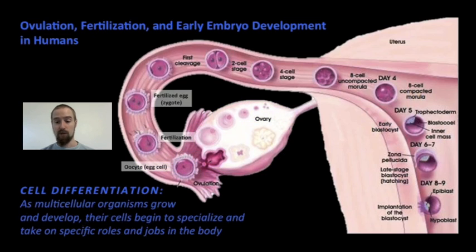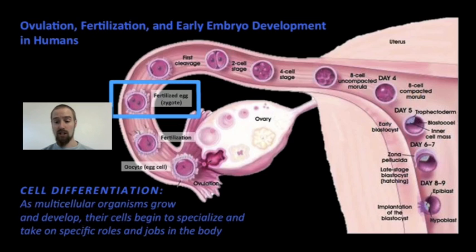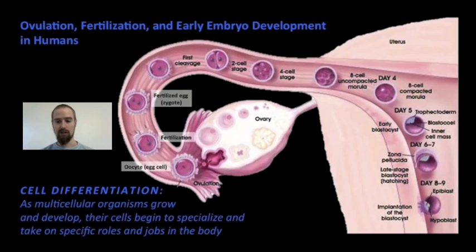If the timing is right, sperm cells — the gametes produced by males — will fertilize this egg here in the fallopian tube. This fertilized egg, called a zygote, now contains a full set of chromosomes — 23 homologous pairs if we're talking about humans. As a result, this zygote contains all the genes necessary to build a complete human being, a full set of genetic instructions.